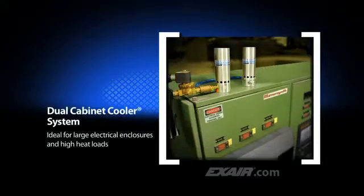Dual cabinet cooler systems are available with cooling capacities up to 5600 BTUs per hour, which is 1,411 kcal per hour. The high cooling capacity up to 5600 BTUs per hour is ideal for large electrical enclosures and high heat loads.